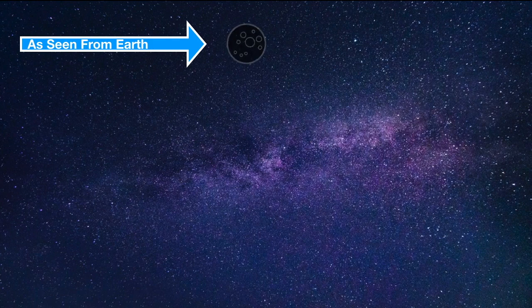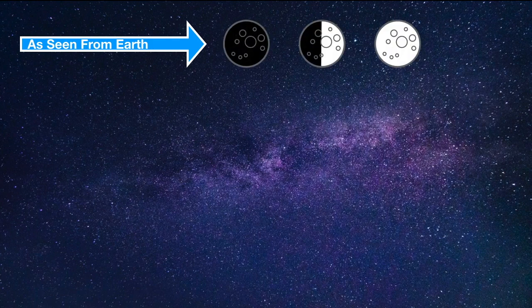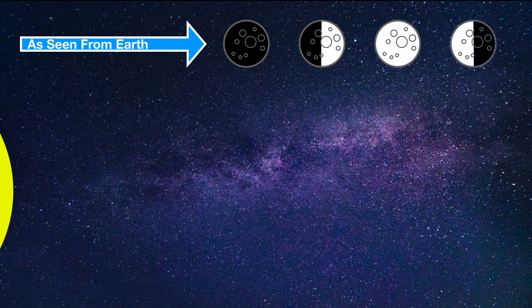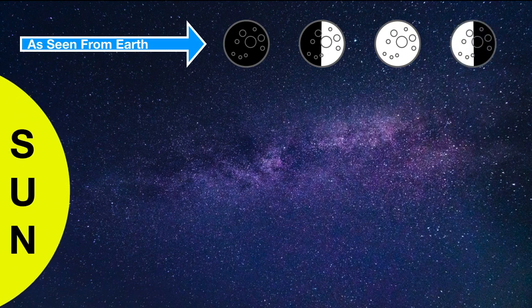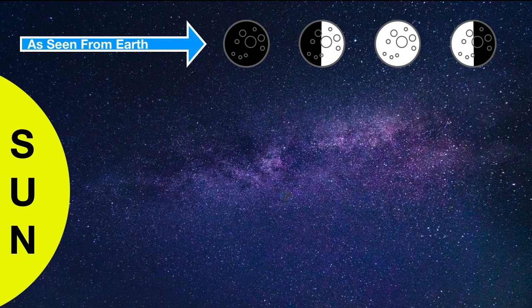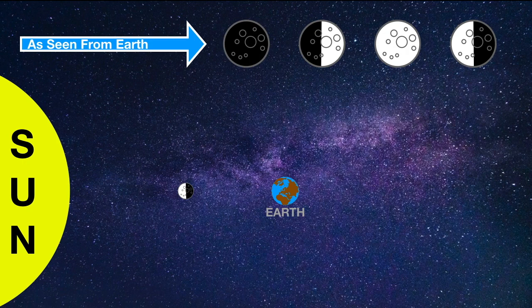The appearance of the moon from Earth changes throughout the month as it orbits the Earth. A new moon occurs when the moon is on the same side of the Earth as the Sun. This means that the lit side of the moon that always faces the Sun is facing away from the Earth, and we see a very dark disc.